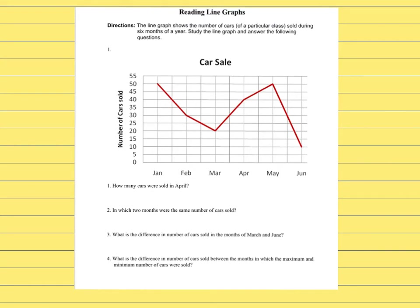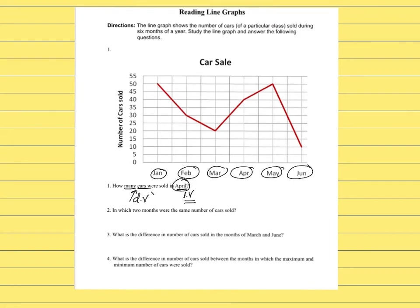Now I'm going to start answering the questions. Question one: how many cars were sold in April? April is the independent variable — it's given. The number of cars is the dependent variable — that's what you're looking for. Go to April, all the way up through the line, then move all the way to the left. The answer: 40 cars were sold in April.